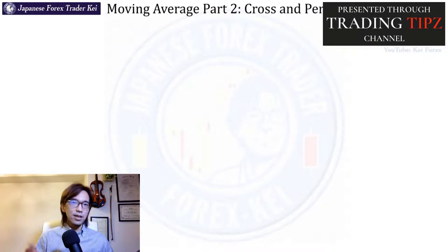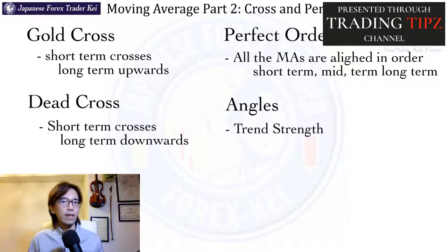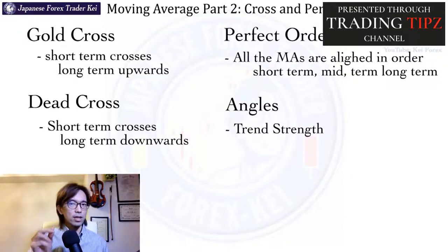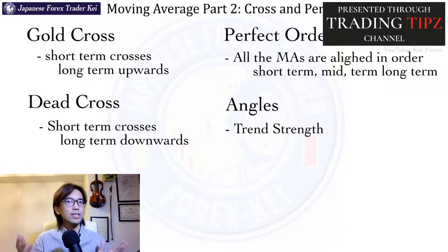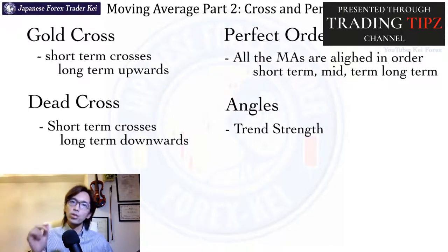Take a look at this. This shows you the basic information of what gold cross, dead cross, and perfect orders and also the angles are on moving average. The gold cross happens when the short-term MA crosses the long-term MA upwards. Short term means like 10 or 20 period and long term means 200 period. So gold cross is happening when the 10 or 20 MA crosses the 200 MA upwards.